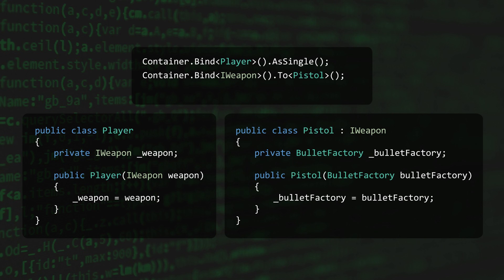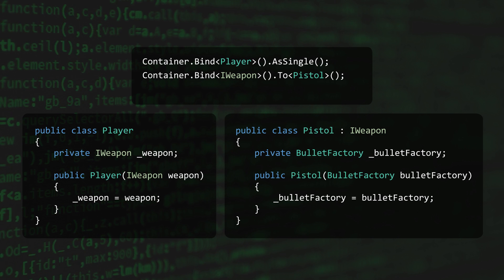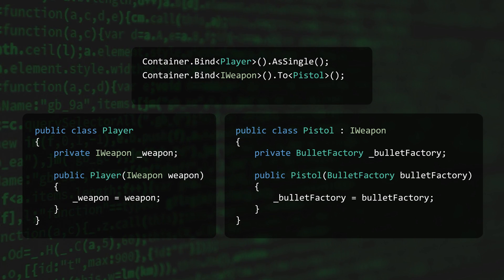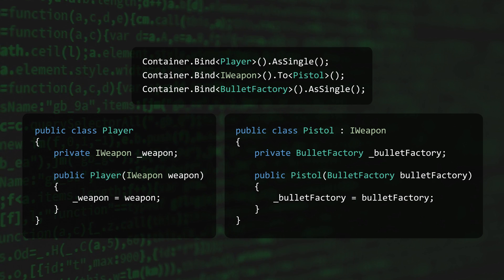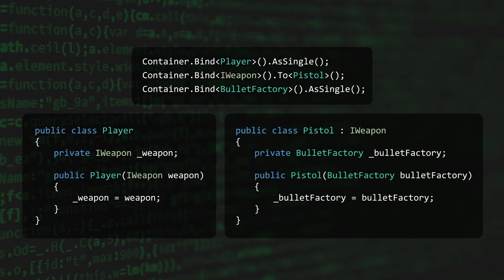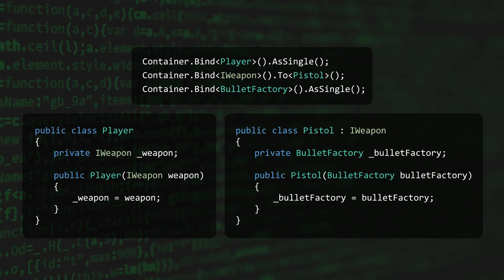As we can see, Pistol has a dependency on BulletFactory. We'll need to add a binding statement to the container that tells it how to create the correct instance. If we don't add a binding statement for BulletFactory, then our application will fail to start — which is good, because you wouldn't want your game to run with some object lingering in the code without its dependencies. Zenject provides great validation tools that tell you when the container can't resolve a dependency and helps you track down the missing bindings.